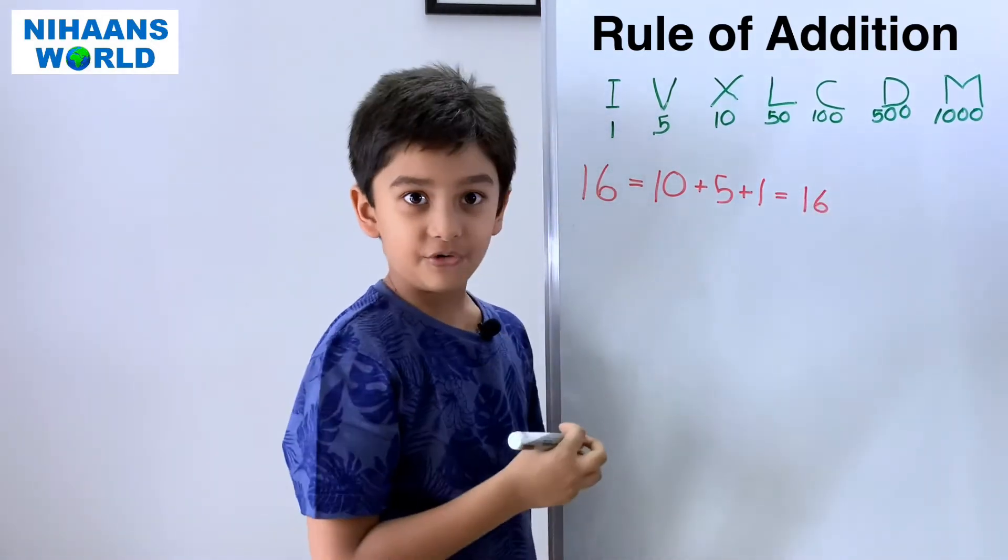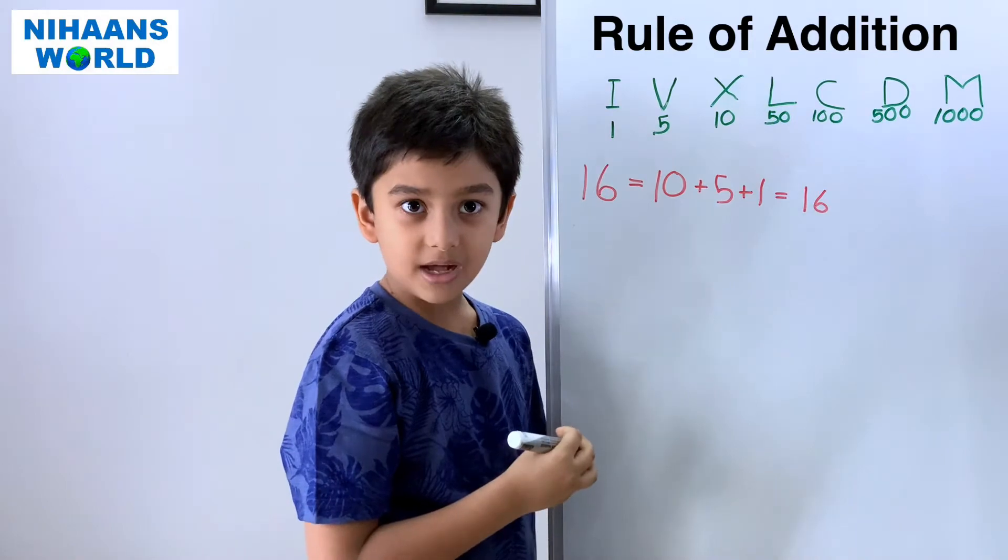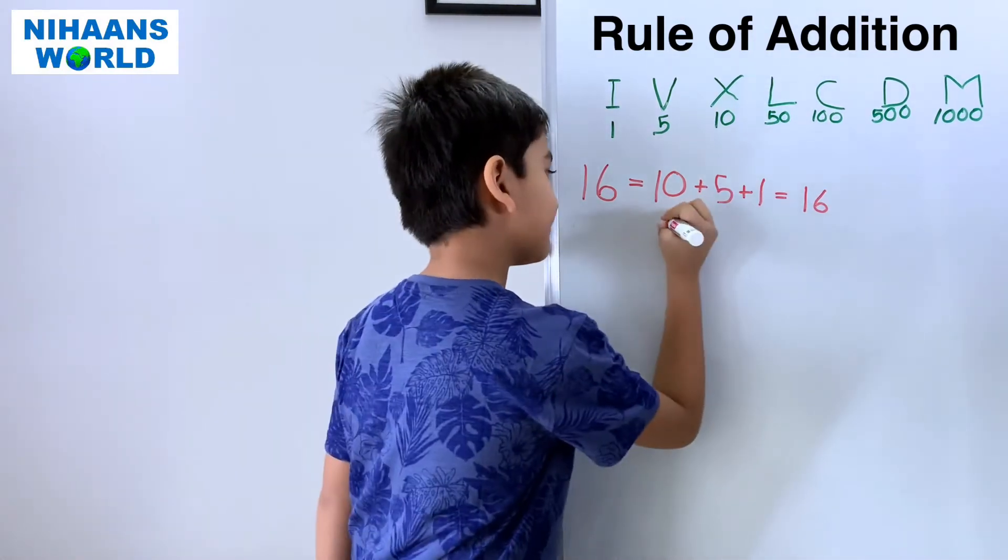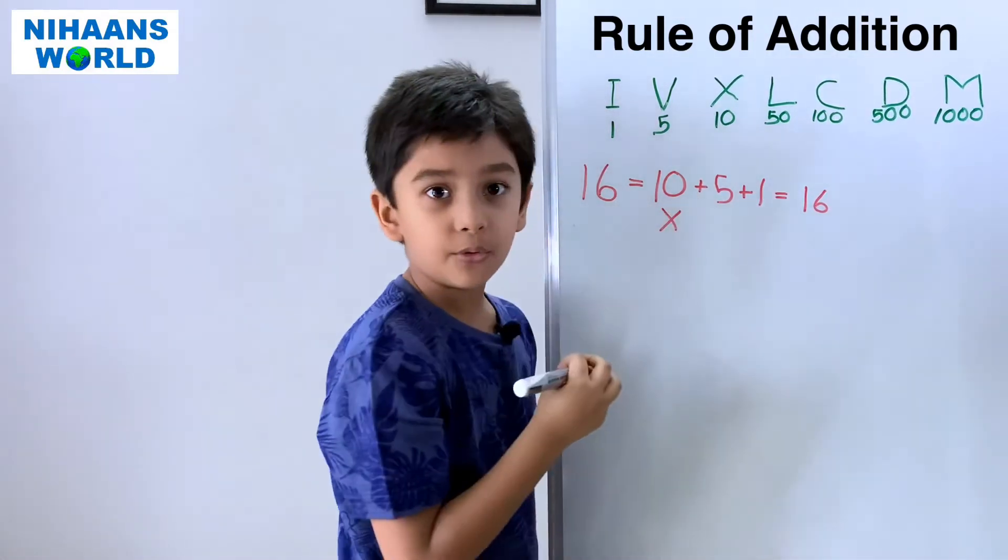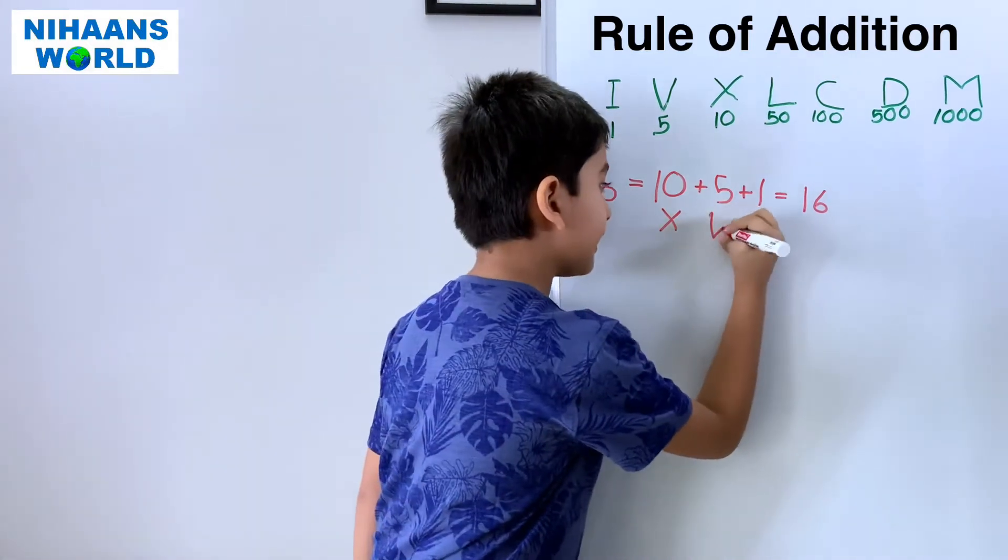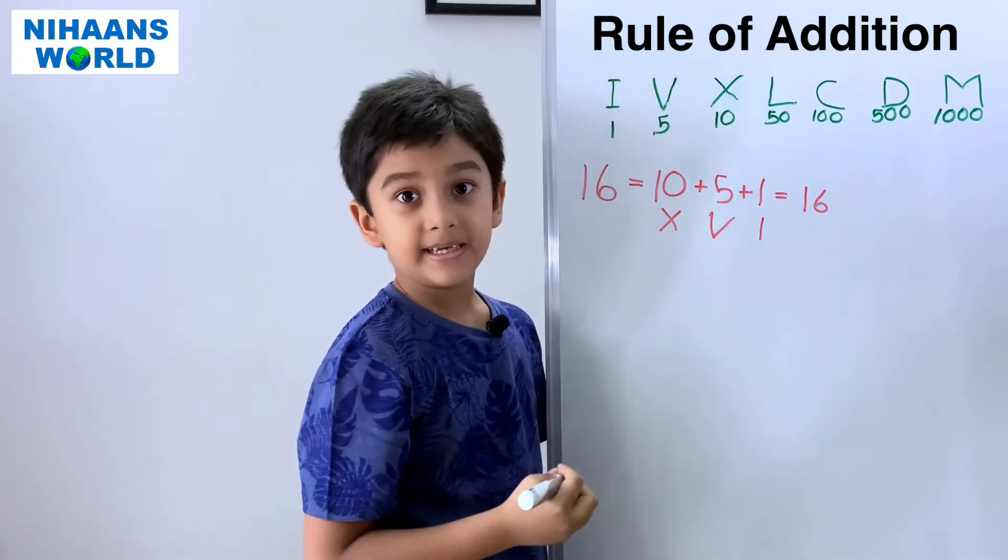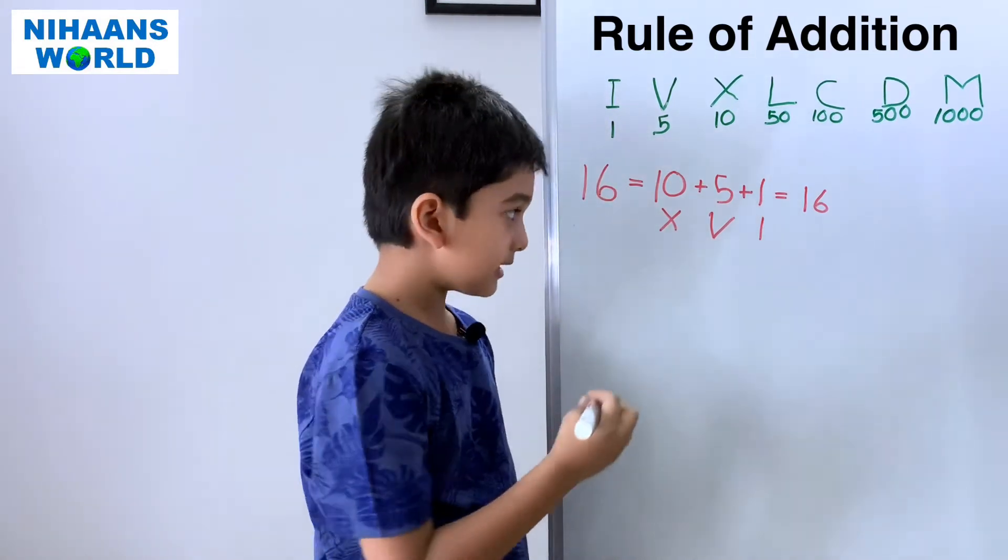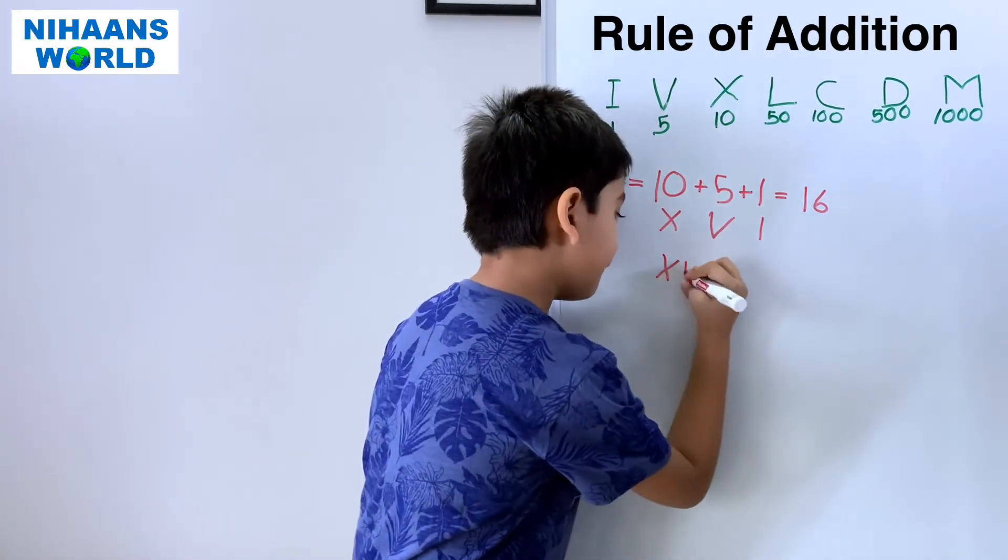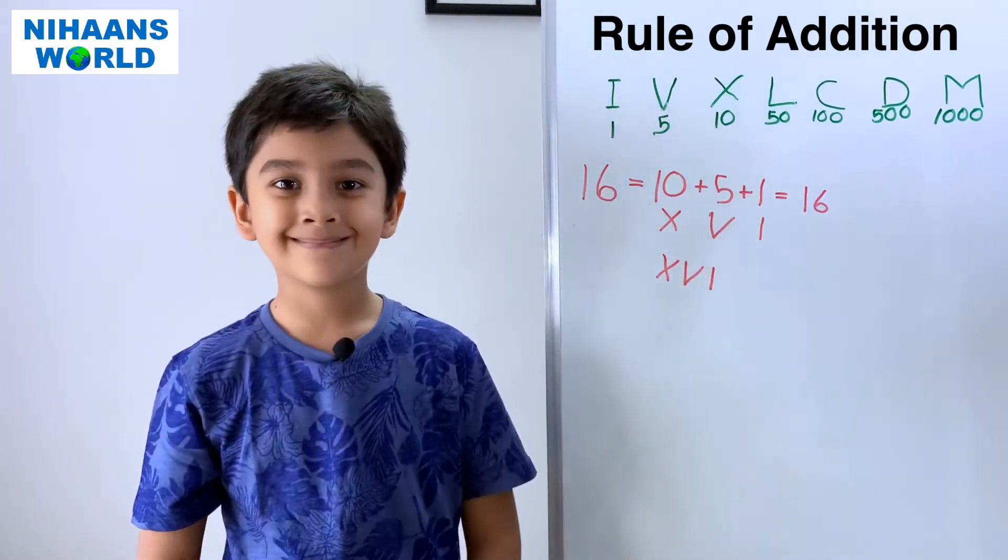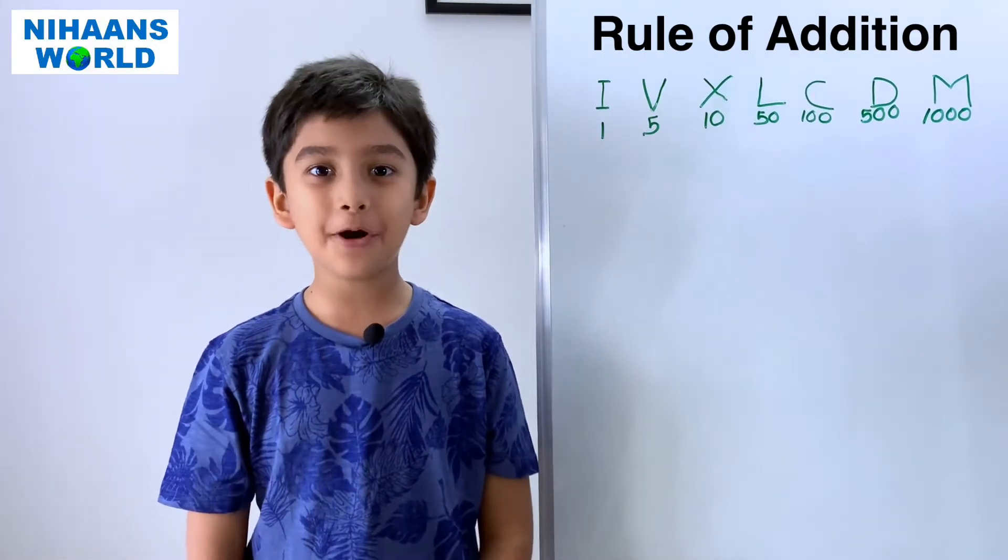Ten plus five plus one is equal to sixteen. So, what do we write ten in Roman numerals? X. Five in Roman numerals? V. One in Roman numerals? I. So, sixteen we write in Roman numerals as X V I.